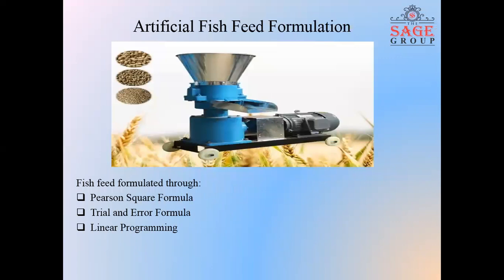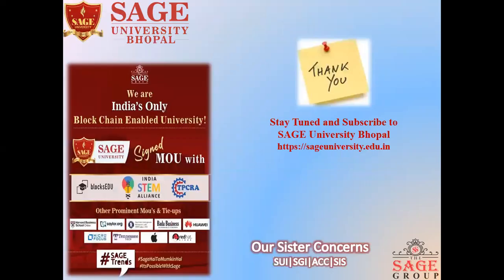Artificial fish feed formulation. Artificial fish feeds are formulated through the Pearson Square formula, trial and error formula, and linear programming. Thank you for listening. Stay tuned and subscribe to our Sage University Bhupal page.